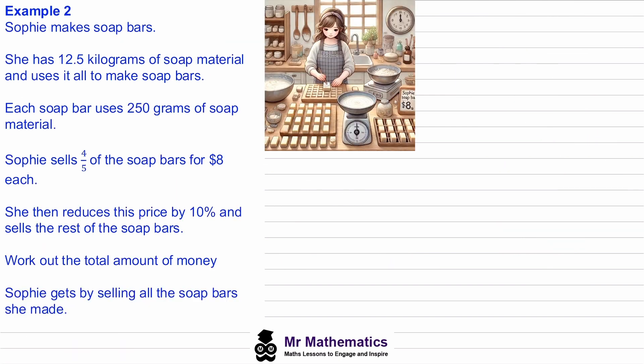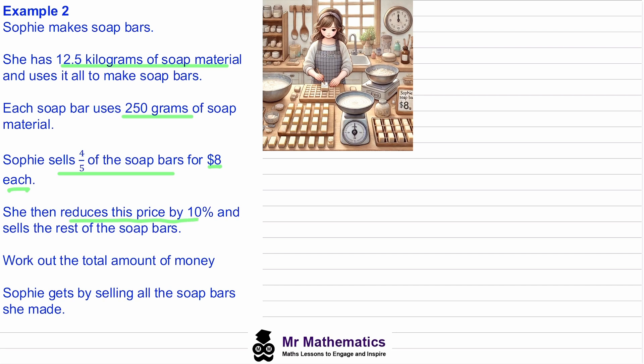Now let's try another question. Sophie makes soap bars and she has 12.5 kilograms of soap material. Each soap bar uses 250 grams. She sells four fifths of her soap bars for eight dollars each, then reduces the price by 10 percent and sells the rest. We need to work out the total amount of money Sophie makes. You may want to pause the video and try this yourself before we go through the worked solution.